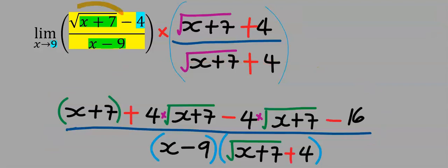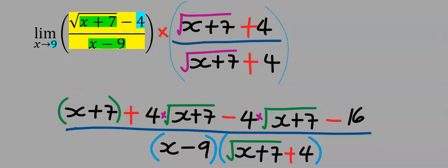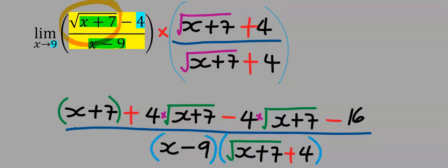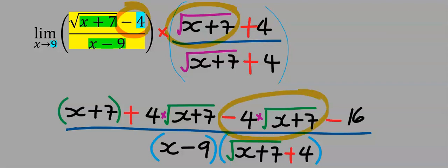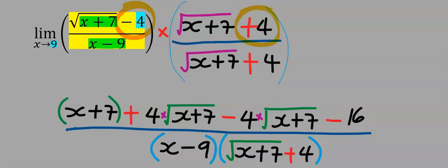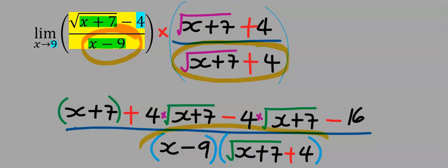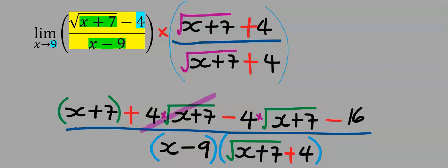That is: square root of (x+7) multiplied by square root of (x+7) gives us x plus 7. Next, square root of (x+7) multiplied by 4 gives 4 times square root of (x+7). Then minus 4 multiplied by square root of (x+7) gives minus 4 times square root of (x+7). Next, minus 4 multiplied by plus 4 gives minus 16. At the denominator, x plus 9 — we multiply everything and bring them together.